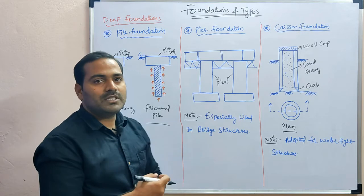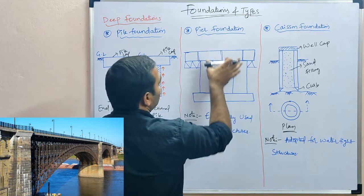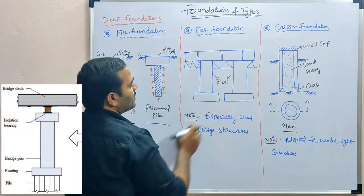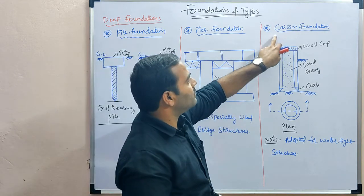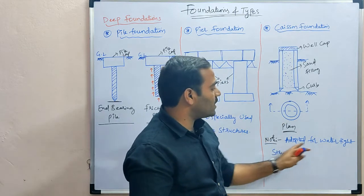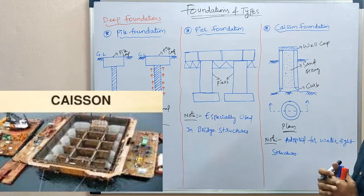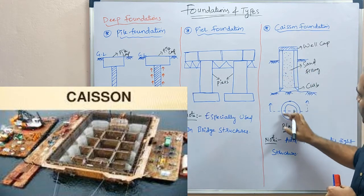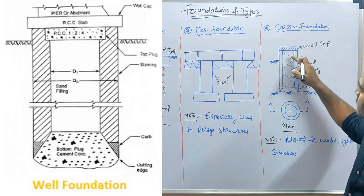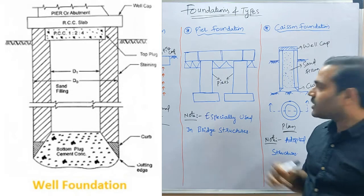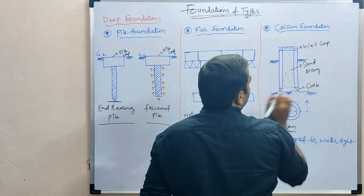Pier foundation is mostly seen in bridges — the two piers support the bridge and transfer the load to the subgrade. It is especially used for bridge structures. The third type is caisson or well foundation, used for watertight structures where water levels are high. It is mostly circular in shape; when the section is cut, the hollow interior is visible, and this hollow space is filled with sand to transfer the load to the subgrade.